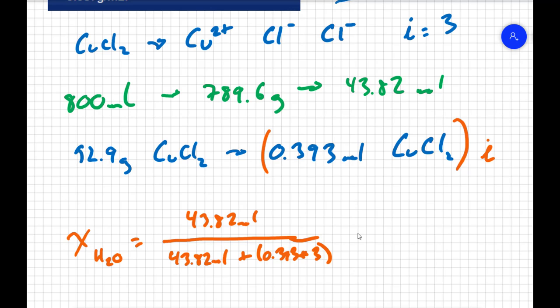That's a step we hadn't had to do in the previous problems because we were dealing with non-electrolytic solutes. So to find my mole fraction of the water, I take my 43.82 divided by 43.82 plus 3 times 0.393. And I get a mole fraction of my water of 0.9738.